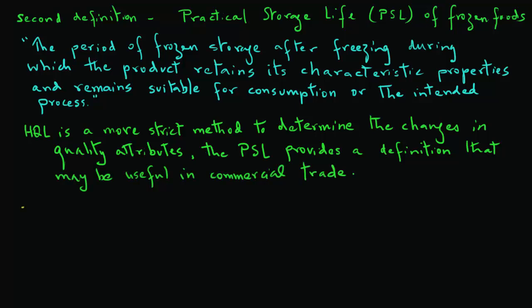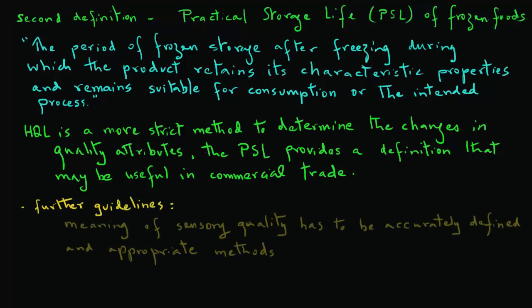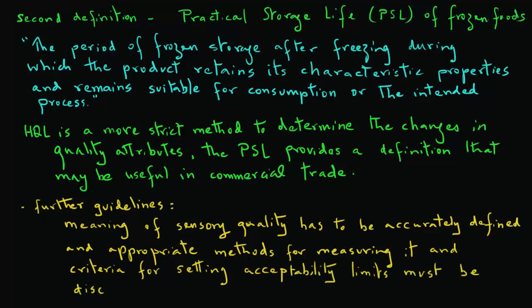In summary, for any definition to be used as a working tool, further guidelines are usually needed. That is, the meaning of sensory quality has to be accurately defined and appropriate methods of measuring it and the criteria for setting acceptability limits must be discussed. These are some of the topics that we will be examining in more detail in some of the other tutorials.